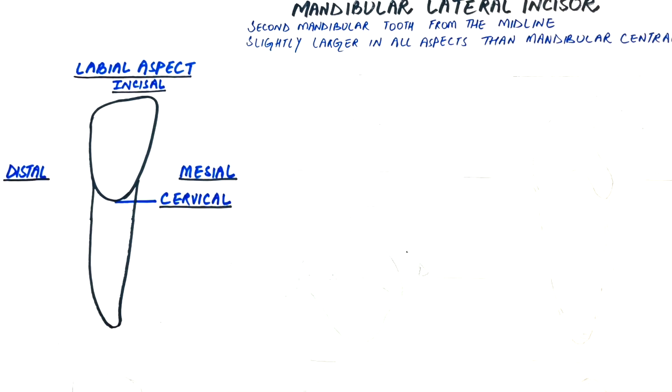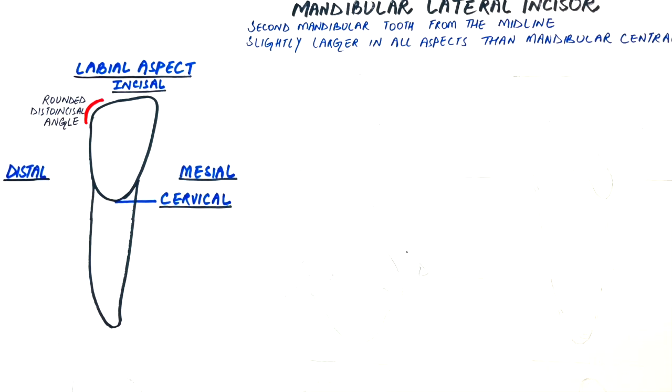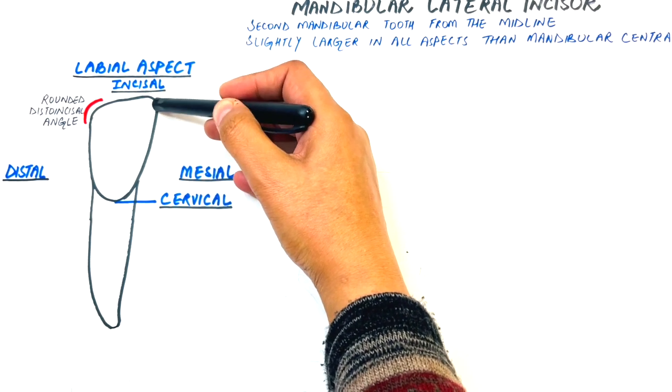The incisal outline or incisal margin slightly slopes towards the distal, resulting in a rounded disto-incisal angle, which is opposite of the sharp disto-incisal angle of the central incisor. This feature also creates a shorter distal outline compared with the mesial outline of the tooth.